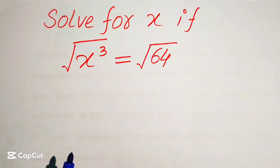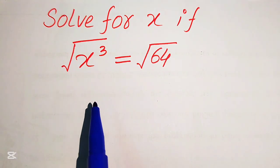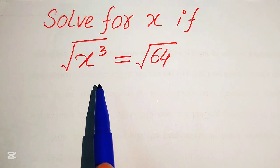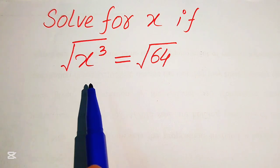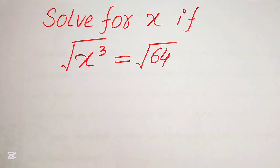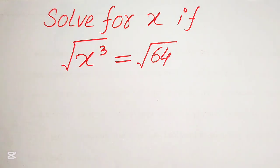Hello everyone, welcome to solve this nice math algebra problem. Here we have x cubed and its whole square root equals to square root of 64, and we solve this problem for the values of x.